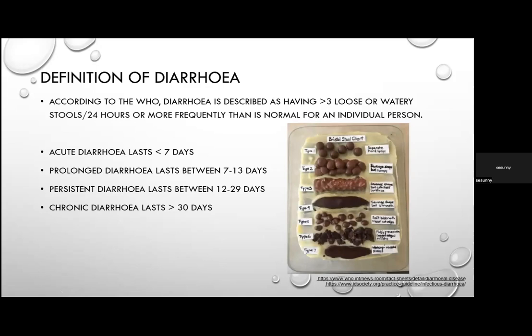This is the Bristol stool chart — type 7 illustrates what watery stool looks like. This particular image is actually a Bristol stool chart cake, and it's amazing what you can find on Pinterest as party ideas.